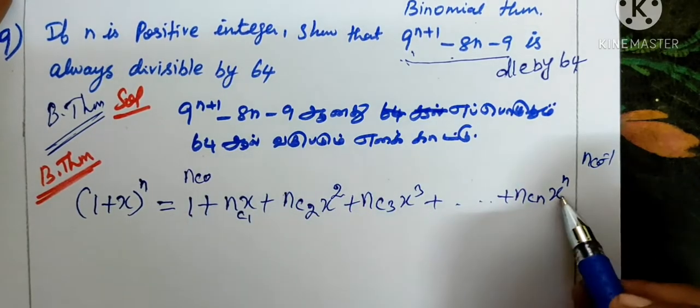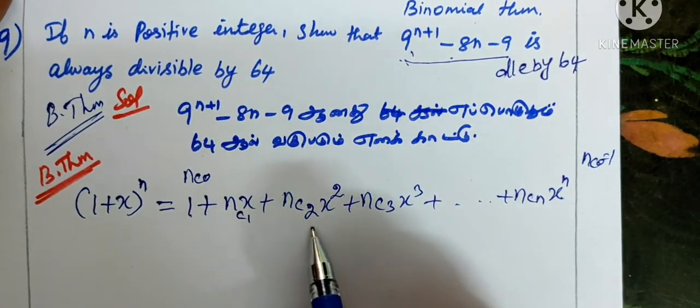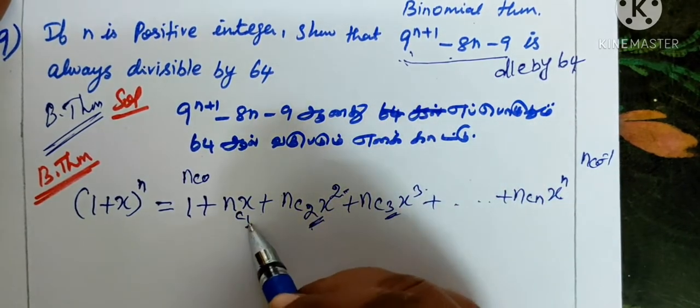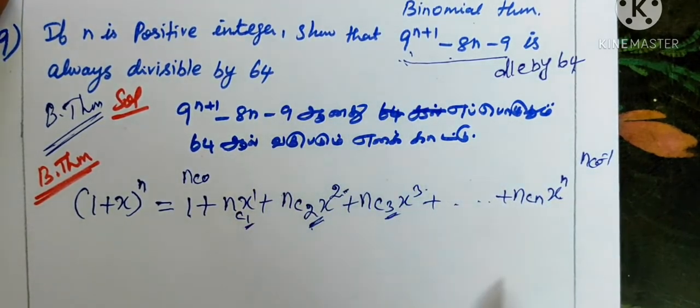Since nc0 equals 1, the first term is 1. x power 1, nc1. nc2 here 2 is here 2, here 3 is here 3, here 1 is here 1. You have to know the formula.